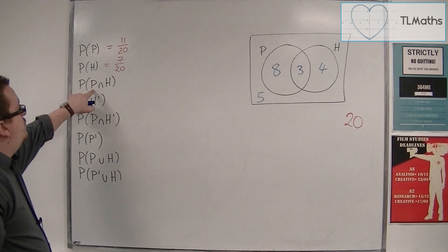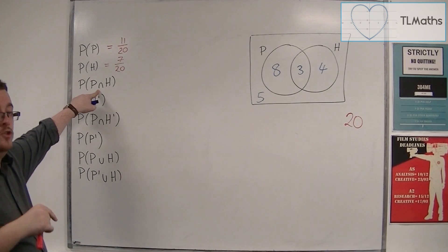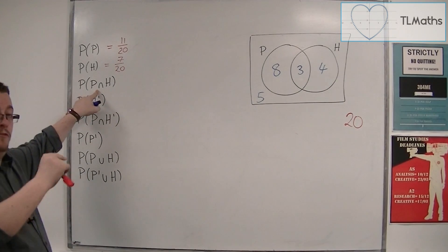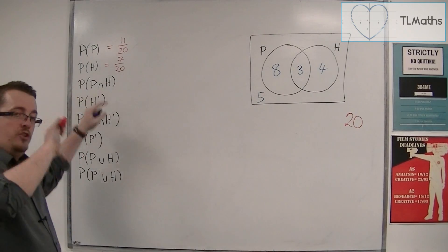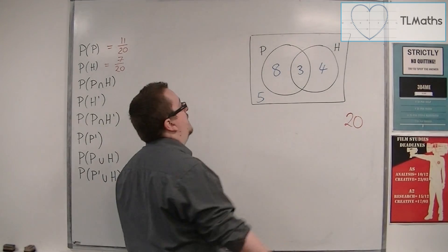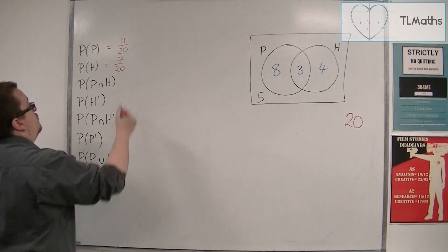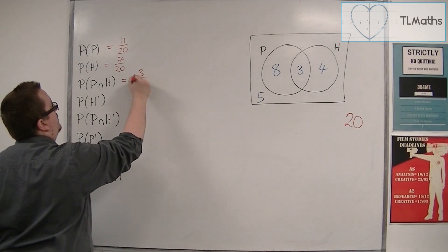Now, if we're looking at the probability of physics intersection history, that means the probability of physics and history. How many students study both at the same time? And so that would be 3. So there's 3 out of 20 who do that.